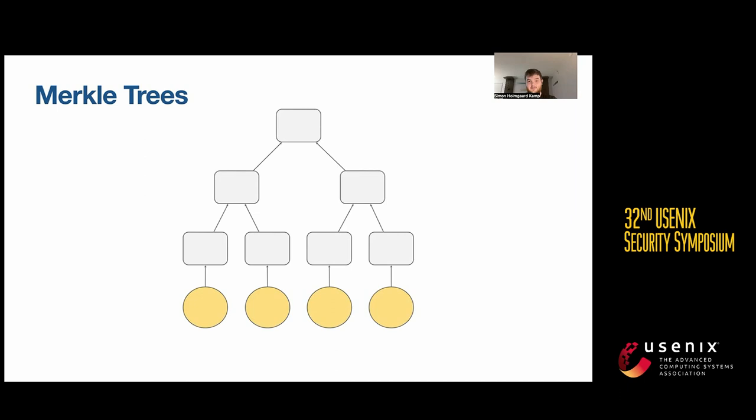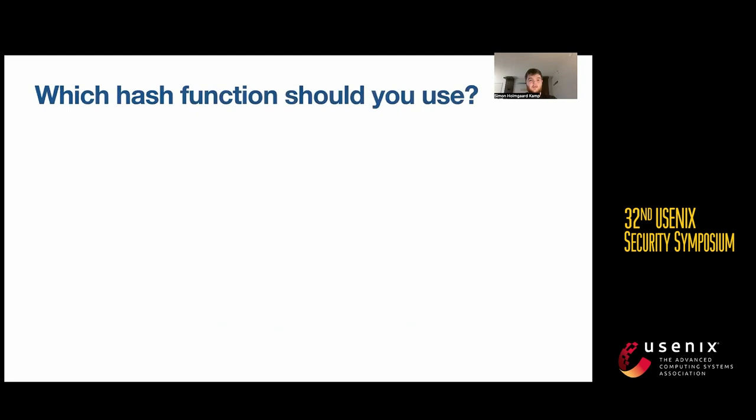If you want to do this as part of a zero knowledge proof in a circuit, then it's crucial that you choose the right hash function because this can quickly dominate the computation time of your proof otherwise.